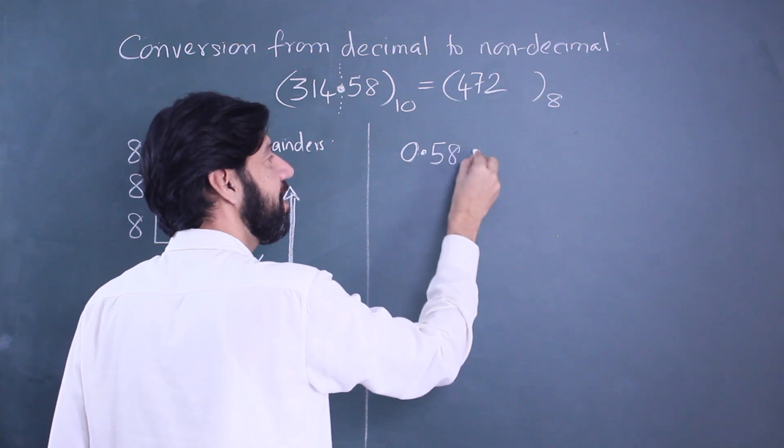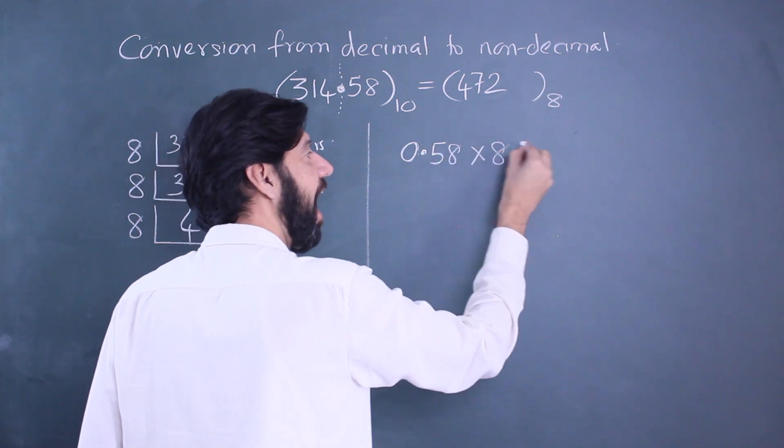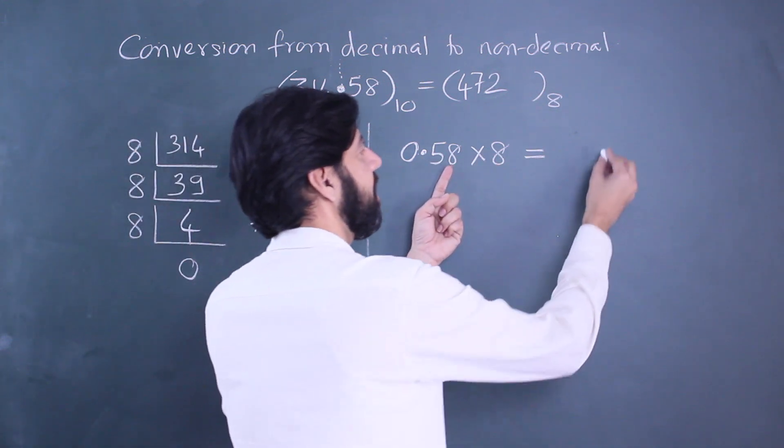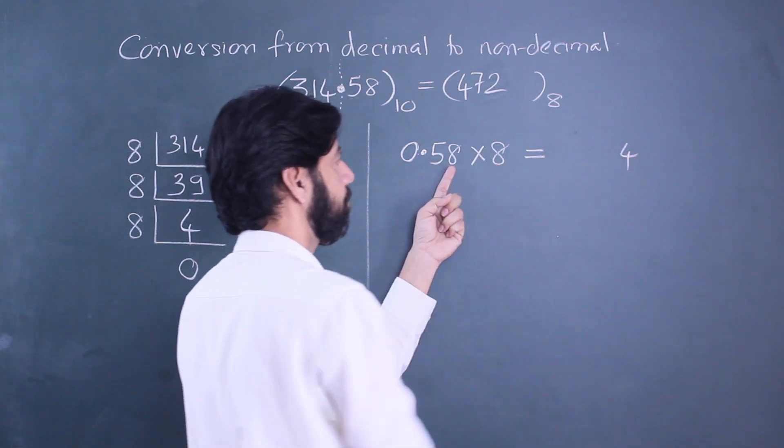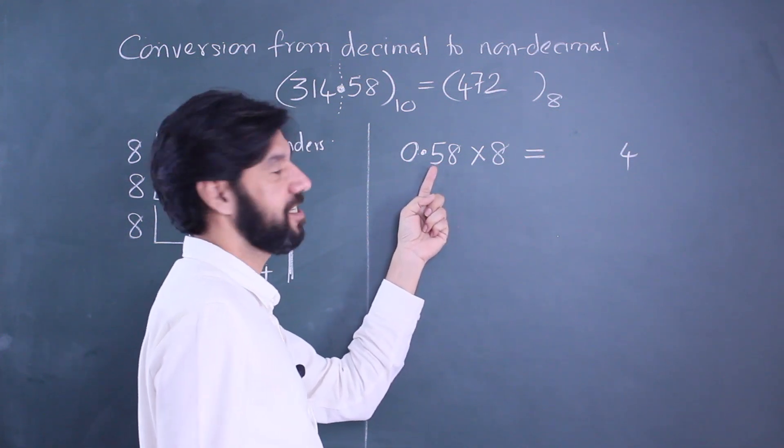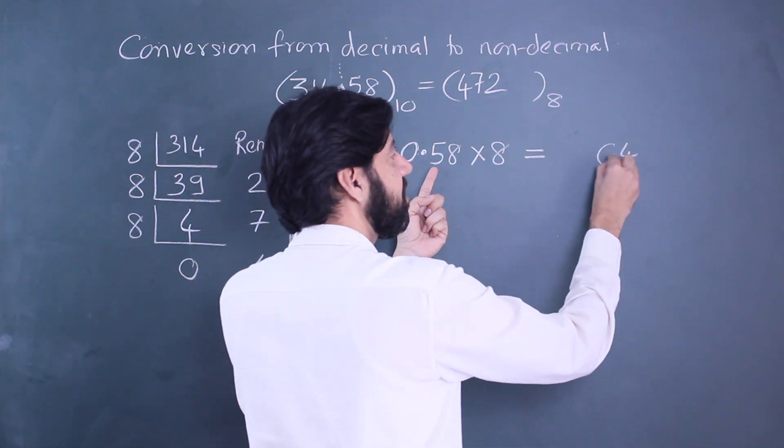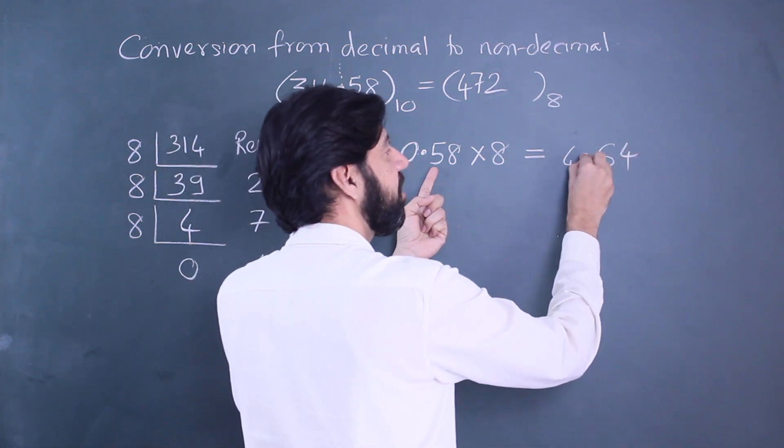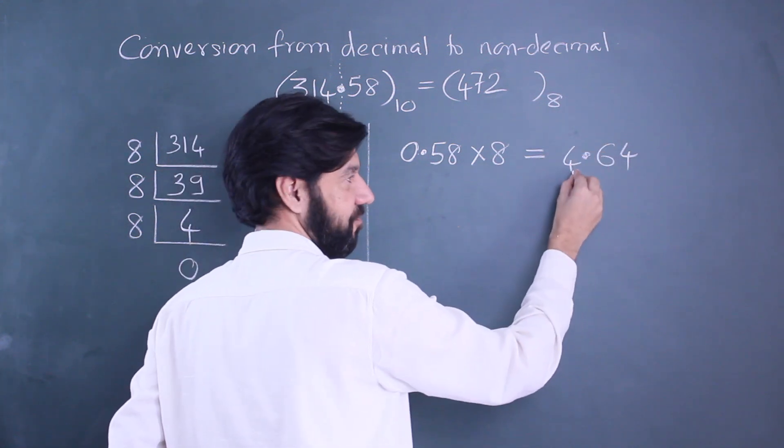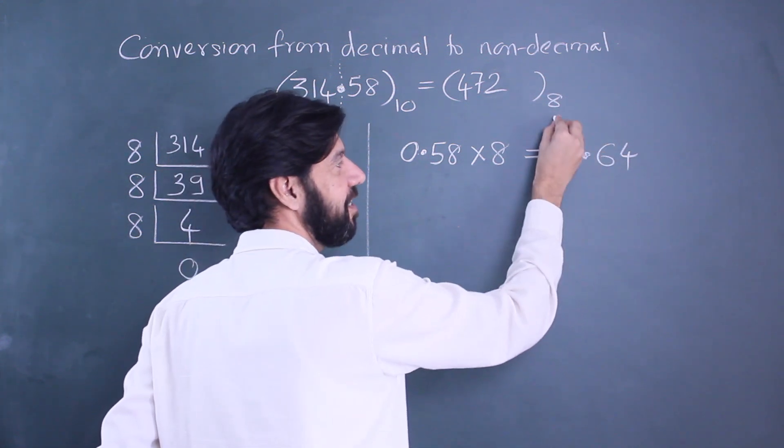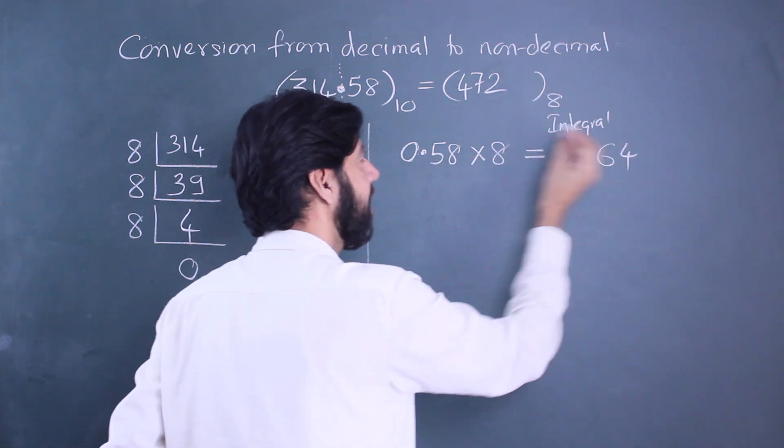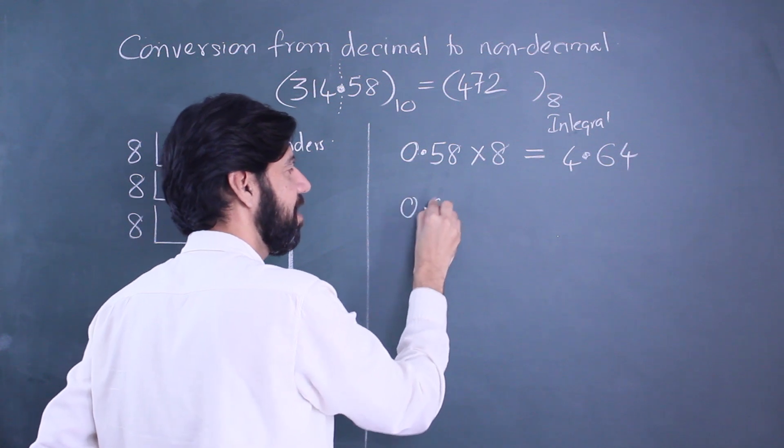Here we divided and isolated the remainder. For the decimal part, we will multiply the decimal part with 8 and we will isolate the integral part. So 8 times 0.58: 8 eights are 64, 6 carry over, 8 fives are 40, 46 - we get 4.64.